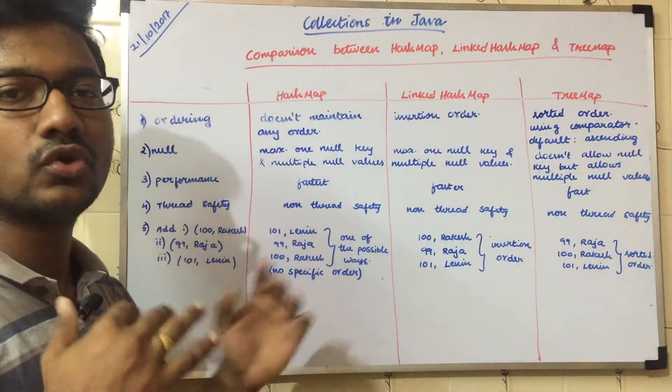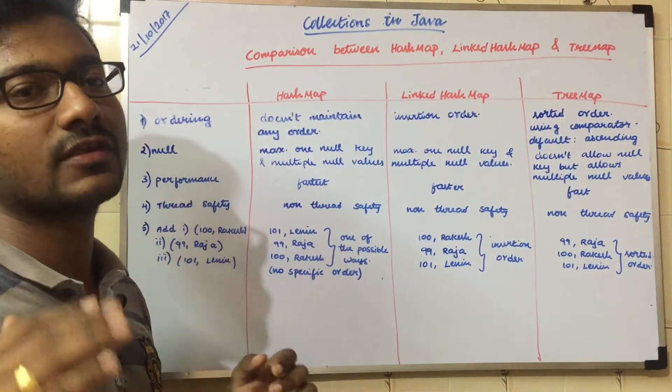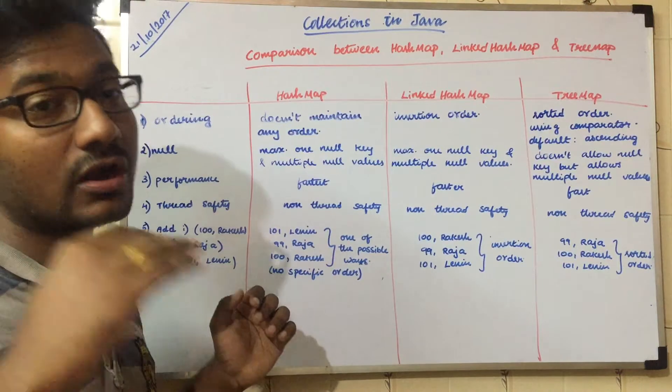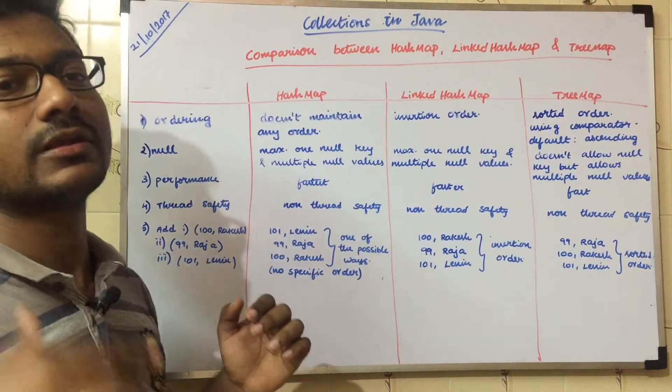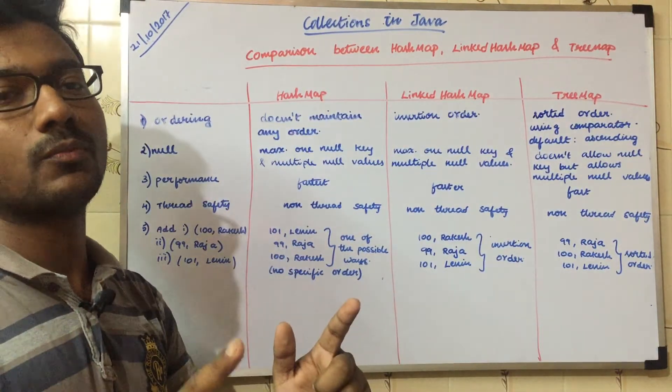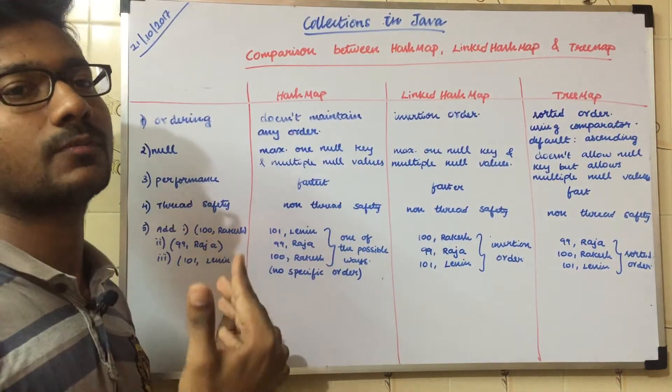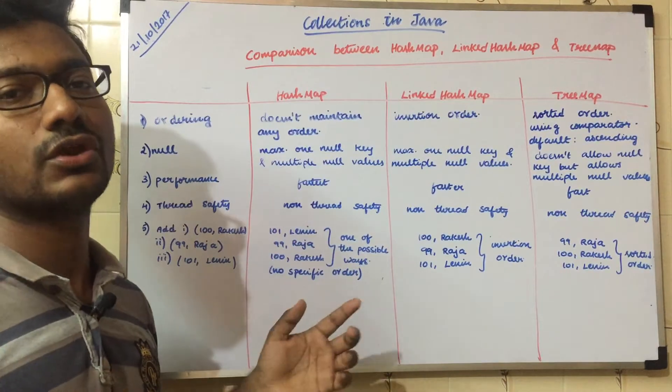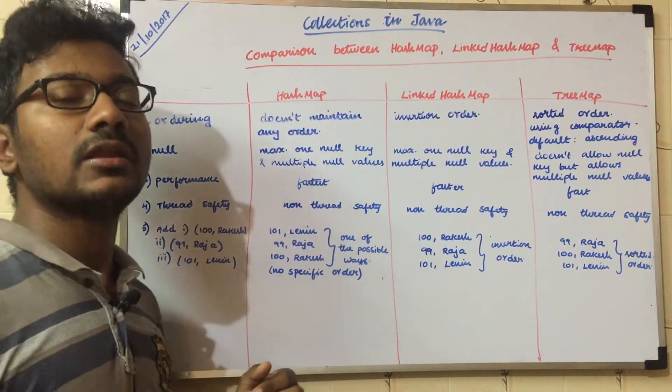All three — HashMap, LinkedHashMap, and TreeMap — are non-synchronized. If multiple threads access and modify them at the same time, external synchronization is needed.